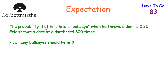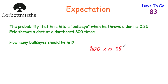Here's one to try yourself. The probability that Eric hits a bull's eye when throwing a dart is 0.35. Eric throws a dart 800 times — how many bull's eyes should he hit? Take the number of trials, 800, and multiply by the probability 0.35: 800 multiplied by 0.35 equals 280. So he should hit the bull's eye 280 times.